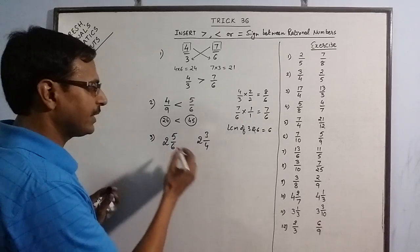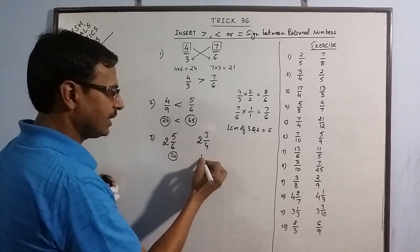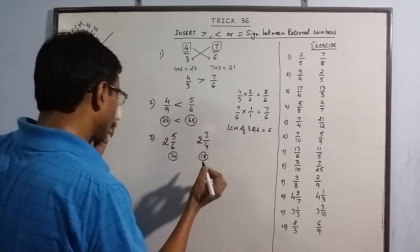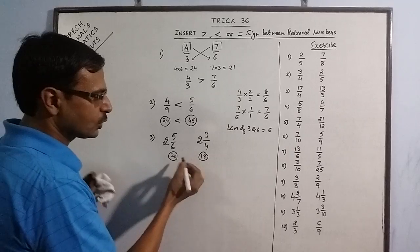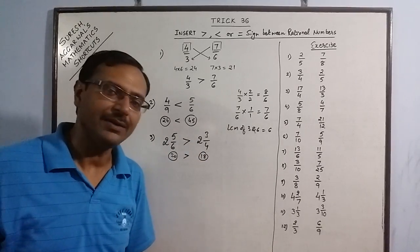5 times 4 is 20 and 6 times 3 is 18. So we get 20 and 18 as the products. 20 is greater, so the mixed fraction 2 5 by 6 is greater than 2 3 by 4.